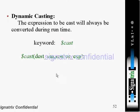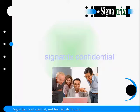The second type of casting is dynamic casting. This dynamic casting will happen during runtime. The expression to be cast will always be converted during runtime. The keyword for this dynamic casting is $cast. The syntax is $cast(destination_variable, source_expression).